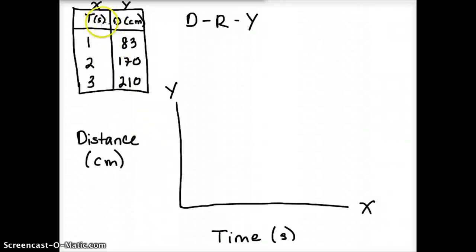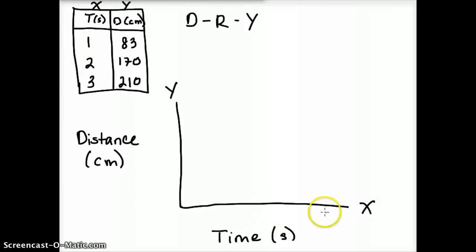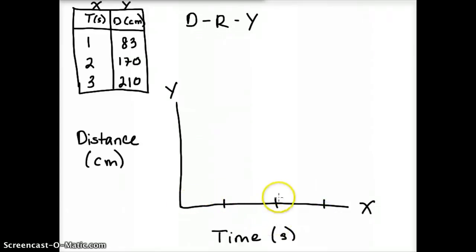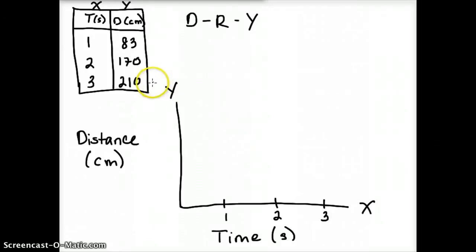Next, we're going to evenly space the x-axis so that we have one second, two seconds, and three seconds, making sure that the spacing is even. Notice that the space between each interval is equal. So we have one, two, three seconds. Now we're going to determine how to set up the y-axis.